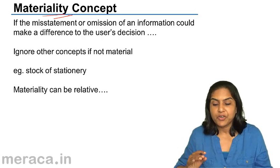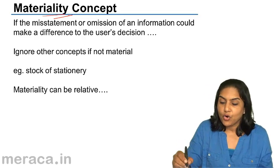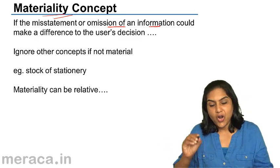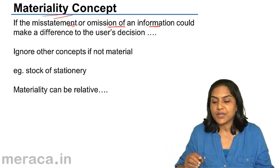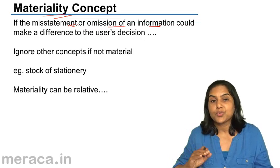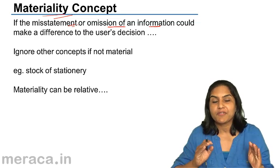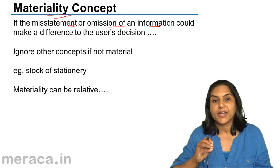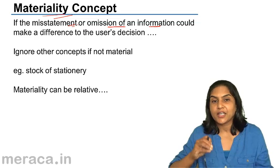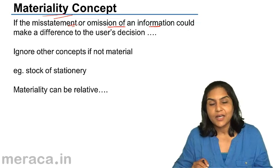The definition is that if the omission of an information or the misstatement of some information makes a difference to the user's decision, then it is material. If you don't provide some information, but that could affect the user's decision, then it would be considered material.